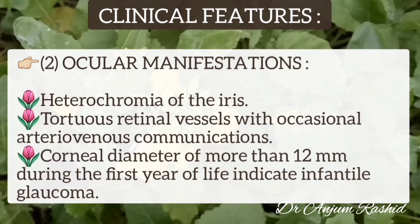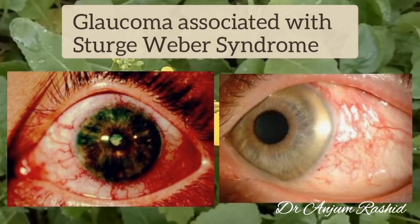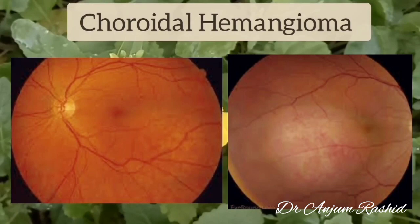A corneal diameter of more than 12 mm during the first year of life indicates infantile glaucoma. These are pictures of glaucoma associated with Sturge-Weber syndrome, showing eyes of two patients with episcleral hemangioma and glaucoma, as well as pictures of choroidal hemangioma in different children with Sturge-Weber syndrome.